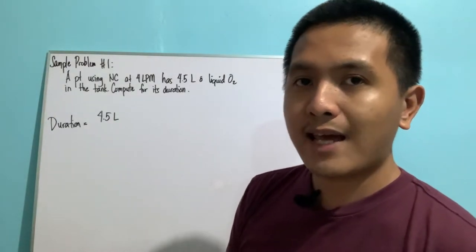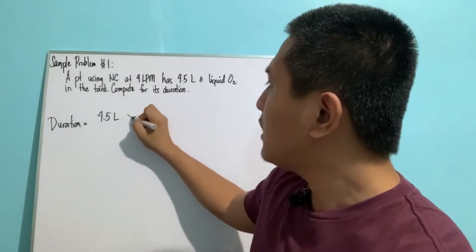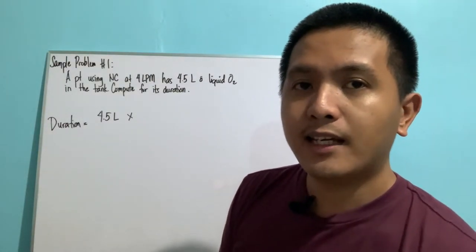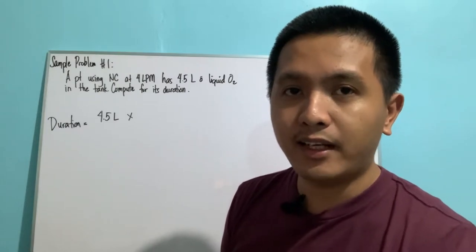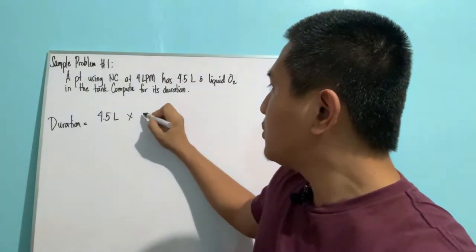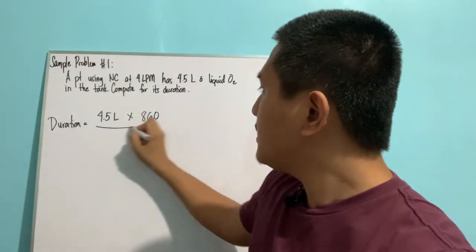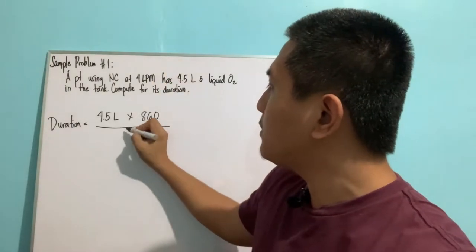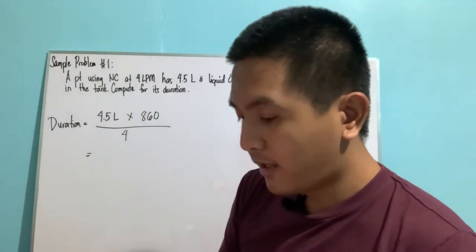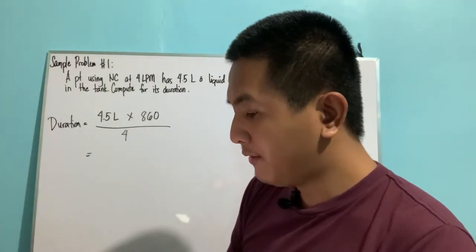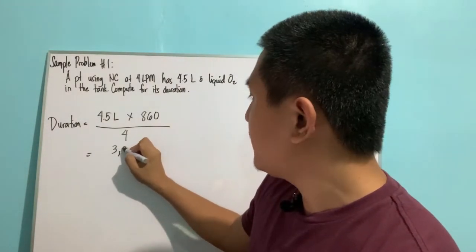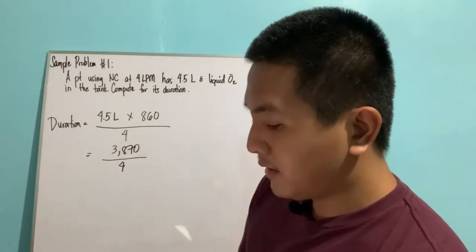We need to convert this liquid oxygen into gaseous oxygen. One liter of liquid oxygen is equal to 860 liters of gaseous oxygen. To convert, we simply multiply 4.5 liters by 860, and then divide by the flow rate, which in this problem is 4 liters per minute.